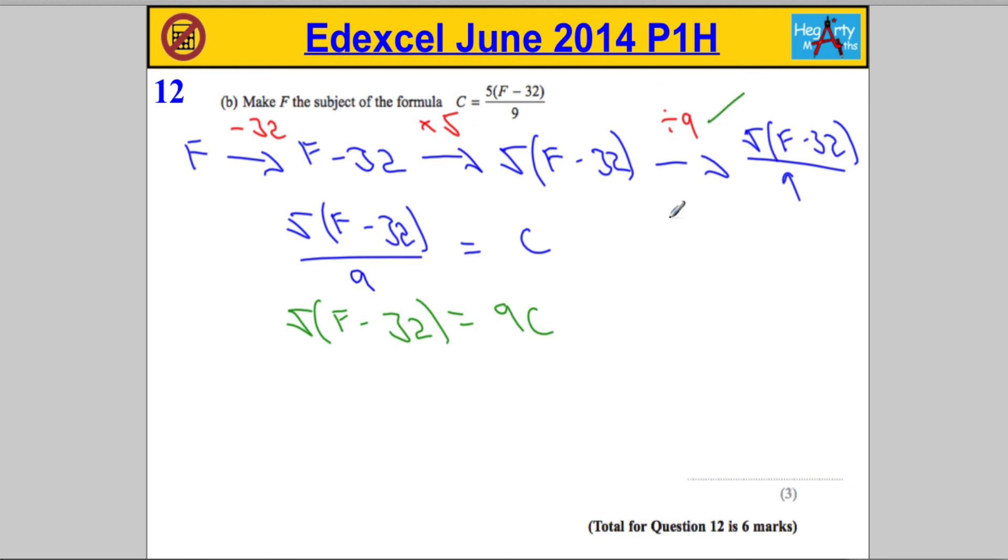So that's times both sides by 9. Then we're going to divide both sides by 5. That's going to get rid of that 5 outside the bracket, leaving me with F minus 32 on the left-hand side. And the right-hand side is going to be 9C divided by 5, but even better to write 9C over 5.